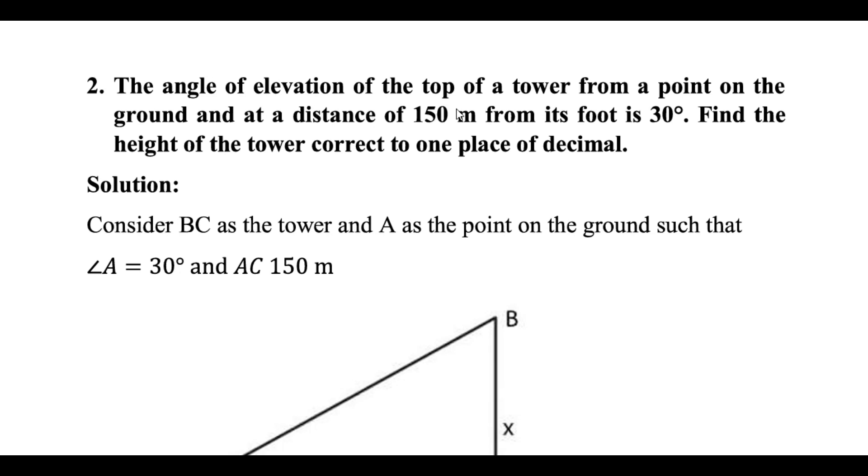The angle of elevation of the top of a tower from a point on the ground at a distance of 150 meters from its foot is 30 degrees. Find the height of the tower correct to one place of decimal.